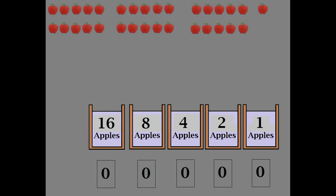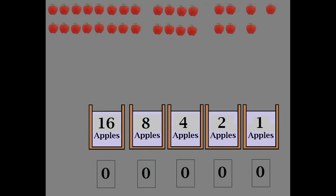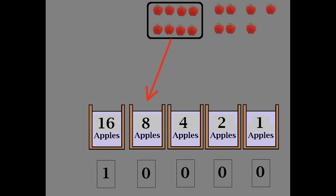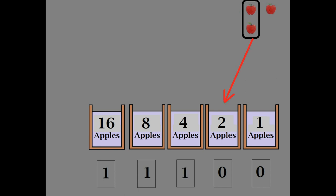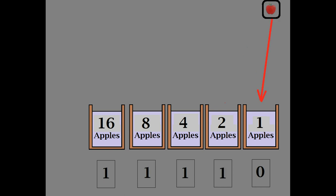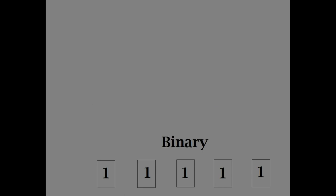Let's try an example. Just like before, we want to fill up the largest bucket first. So rearrange your apples into groups, then start filling buckets. We've just shown that 11111 binary is the same number as 31 decimal.